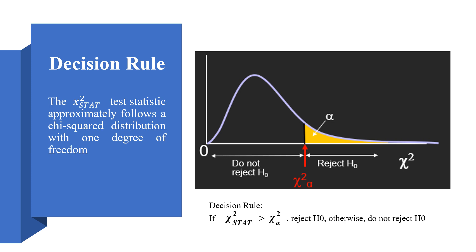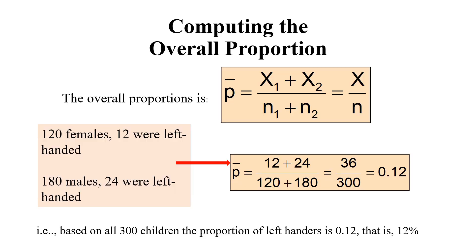The decision rule states that if the test statistic is greater than the critical value for the given degree of freedom, we reject the null hypothesis. If it is not greater, we do not reject the null hypothesis.